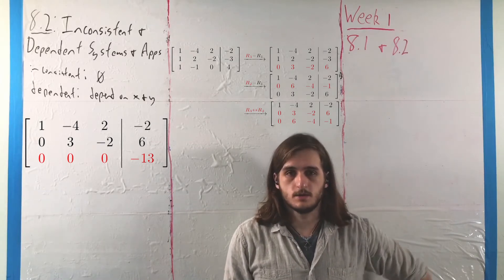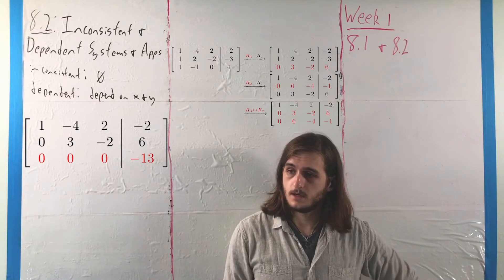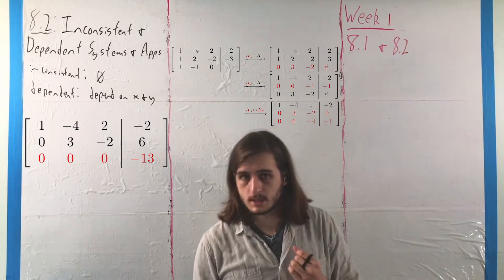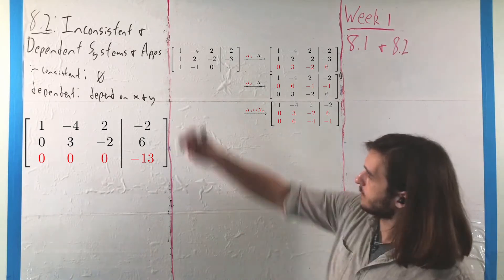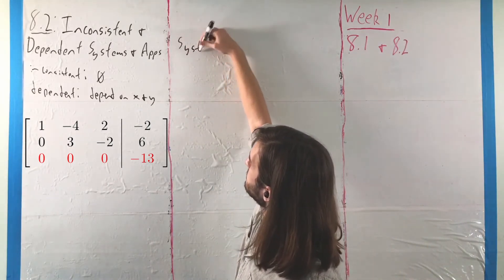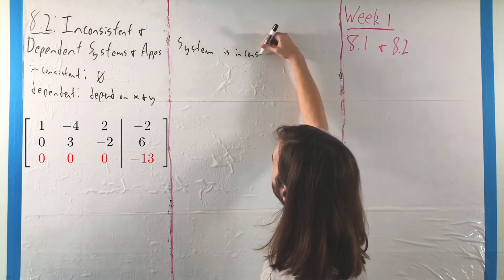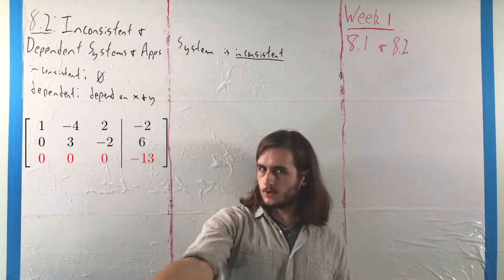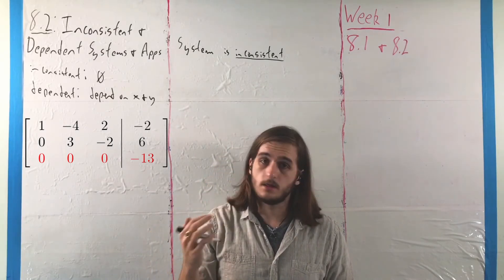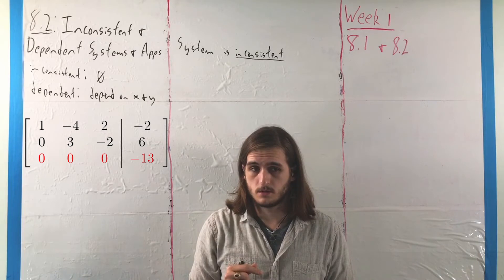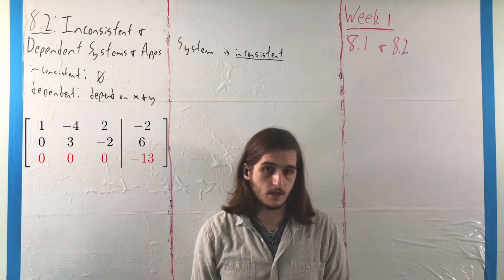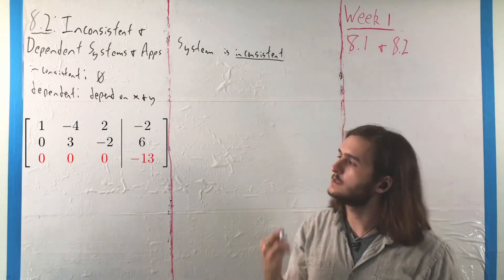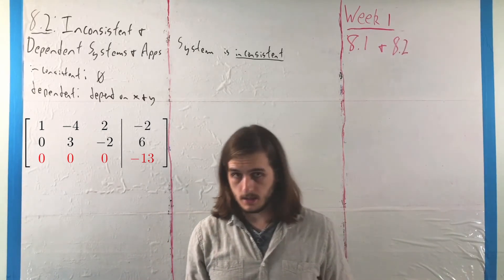Yet again, a strange and impossible statement to say the least, and as a result, because that's what we get, we would say that our original system is inconsistent. And the reason why we say it's inconsistent is because no matter what happens to x, y, and z in those first two rows, nothing we do is going to make 0 equal to negative 13. There's no way we can satisfy that third equality.